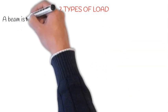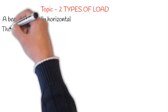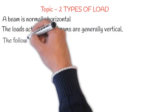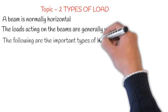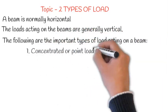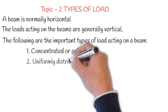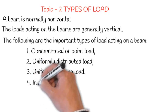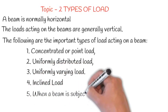Topic 2: Types of Load. A beam is normally horizontal. The loads acting on the beams are generally vertical. The following are the important types of load acting on a beam: 1) Concentrated or point load, 2) Uniformly distributed load, 3) Uniformly varying load, 4) Inclined load, 5) When a beam is subjected to a couple at a section.